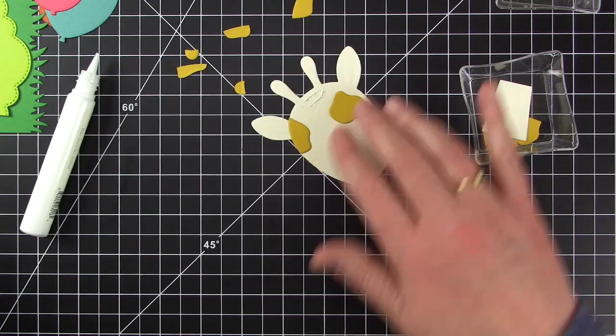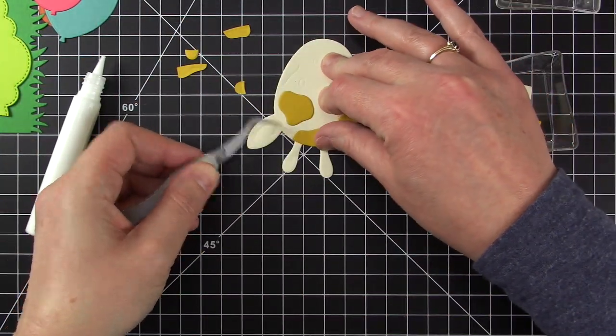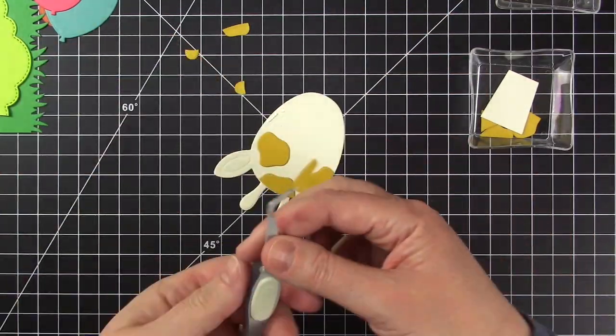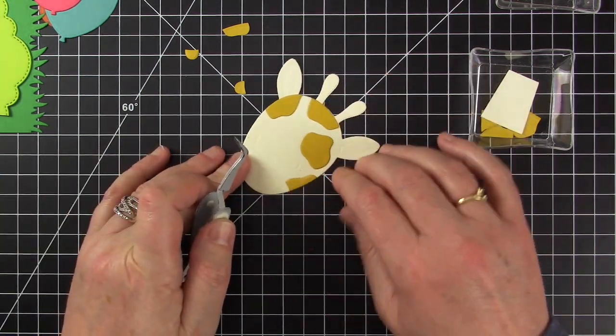The body and neck base dies leave indents so you know where to glue all the pieces. That's what I'm doing right now, just using MFT glue and my tweezers to put the pieces in place.